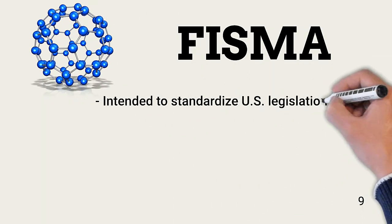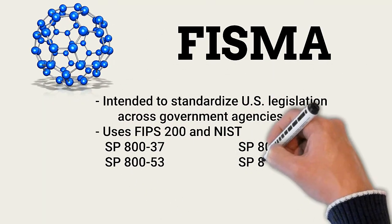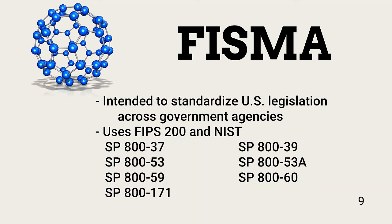The U.S. Federal Information Security Modernization Act, or FISMA, provides the Department of Homeland Security with the authority to administer information security policies for federal agencies. Policies are based on the FIPS 200 and the listed NIST special publications. Any organization that provides or manages information resources to the U.S. government should be aware of and compliant with FISMA policies and procedures.